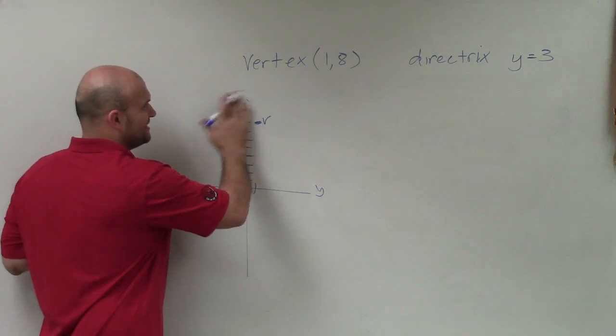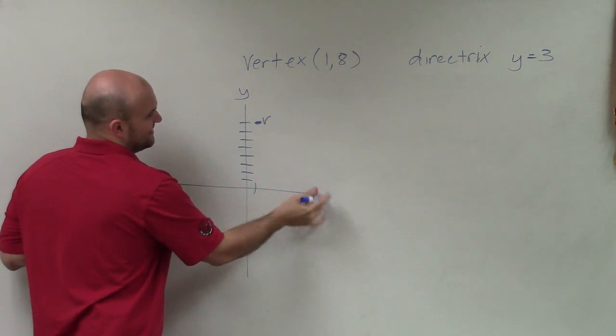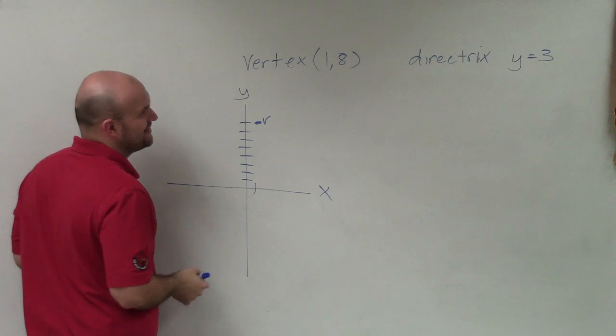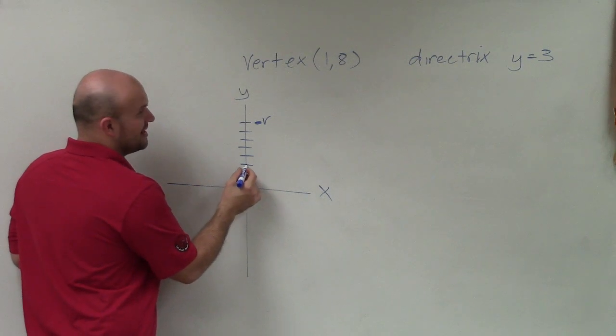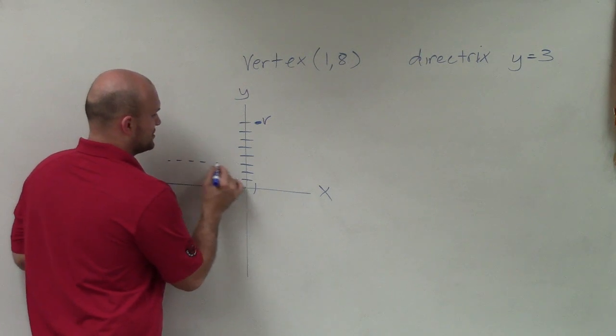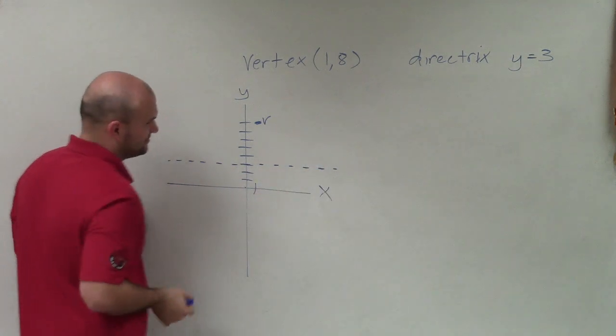So I go on the y. What am I doing? So I go to y = 3. So 1, 2, 3. And that's going to be my directrix, which I'm going to write as a dotted line. All right.